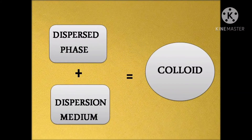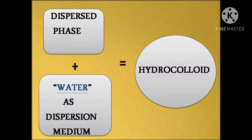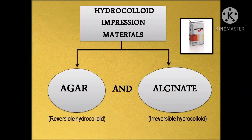Before proceeding, you must first understand what are colloids. A colloid is a two-phase system consisting of a dispersed phase and a dispersion medium. When the dispersion medium in a colloid is water, then the material is known as a hydrocolloid. Agar and alginate are reversible and irreversible hydrocolloid impression materials respectively.